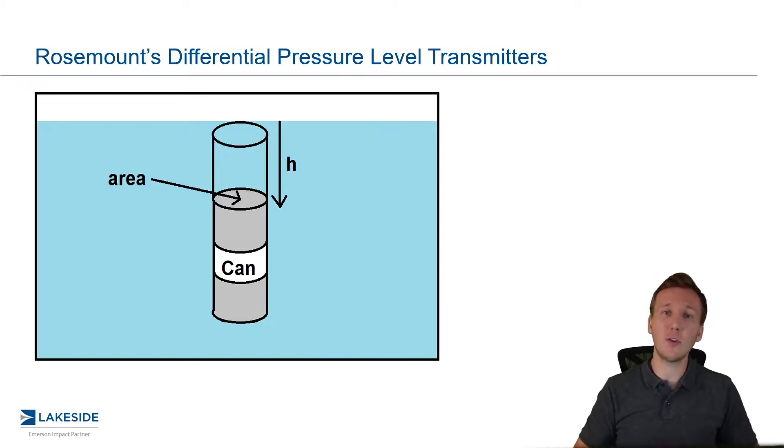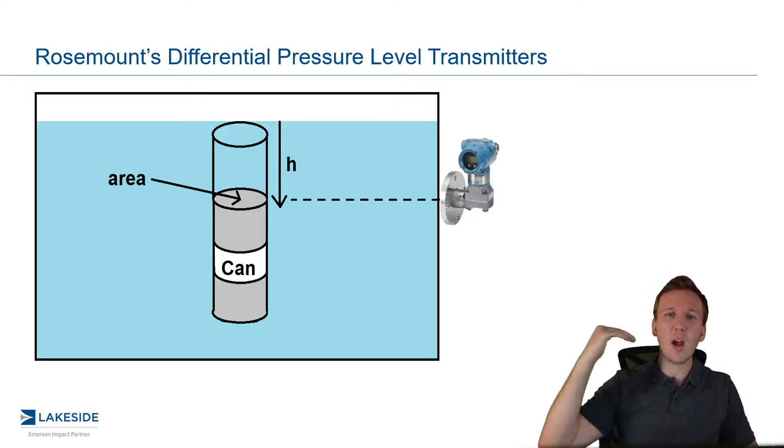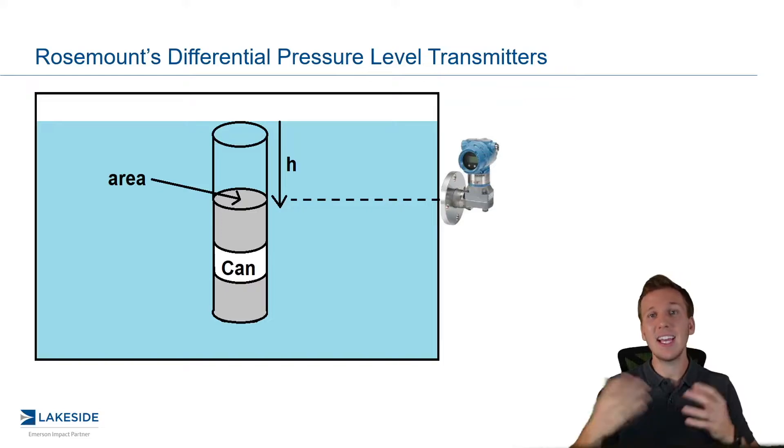Now, we know that there is a certain volume of fluid above this can. And in this case, let's just assume it's water. Now, if we just so happen to install a Rosemount DP level transmitter right at the top of that can, it can then tell us what the pressure that the can is being exerted on itself. And this is really important to understand.